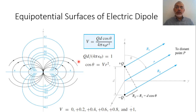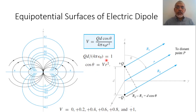The equipotential surfaces can be represented by V = qd·cosθ / (4πε₀r²). Treating qd over 4πε₀ as a constant, we get cosθ = V·r². By replacing V with values such as one volt, half volt, 0.6 volt, four volt, and drawing cosθ = V·r² as a function of theta, we obtain the blue lines shown, which correspond to the equipotential surfaces.